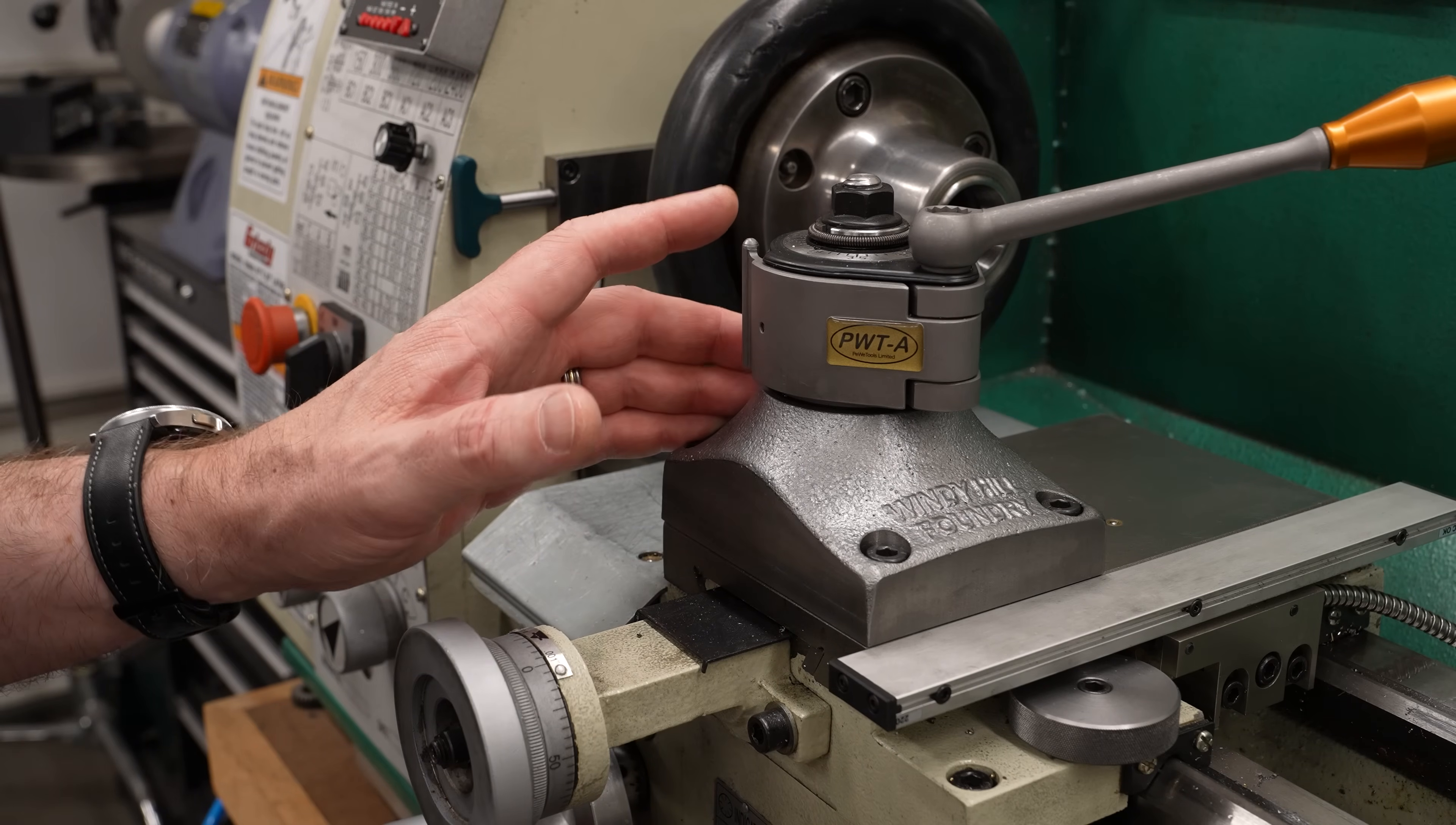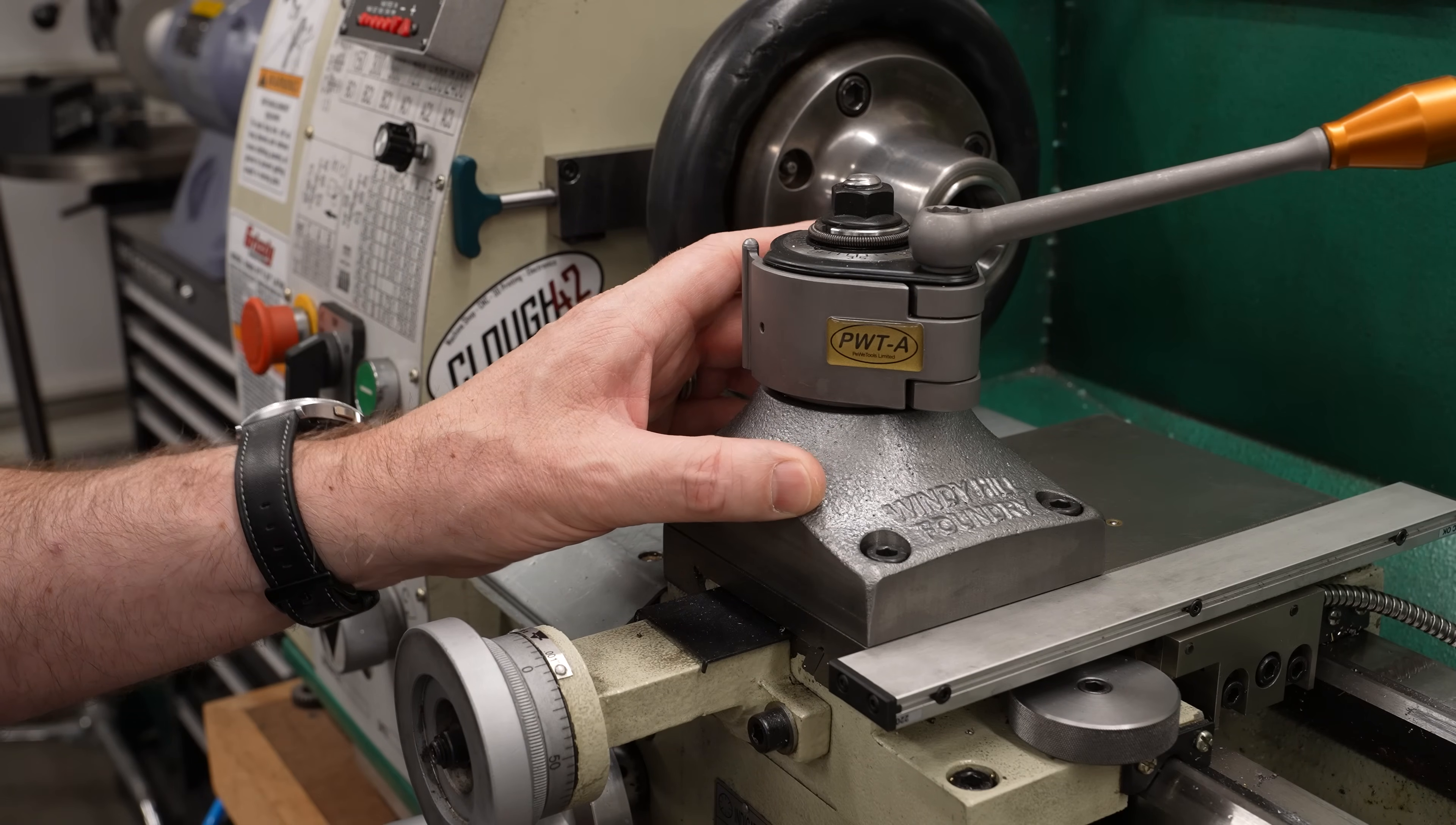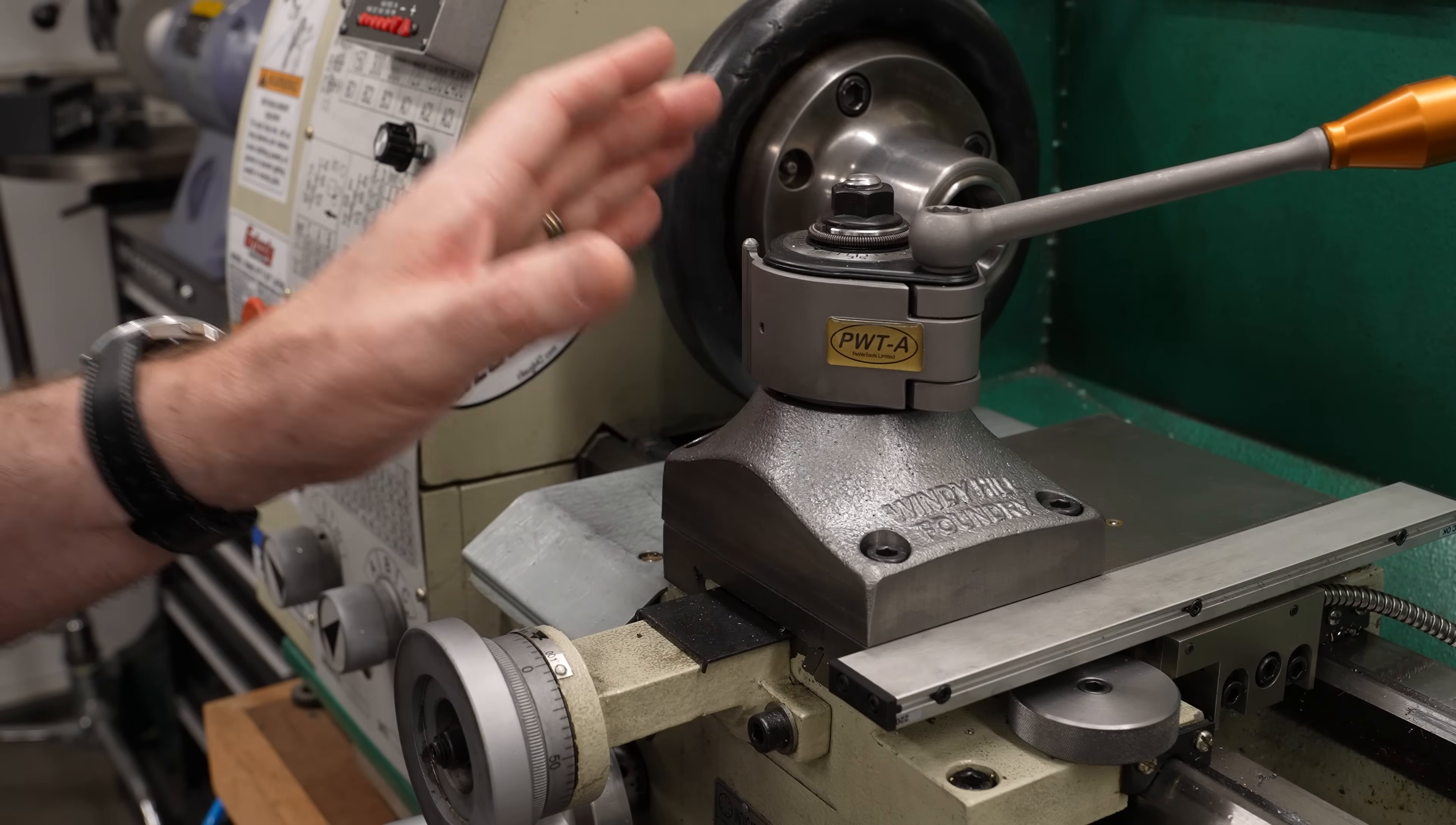When I did this project two years ago, I did it in collaboration with Clark over at Windy Hill Foundry. I made the casting pattern, sent it to Clark, he cast the blanks, sent them back to me, and then I machined it and installed it on the lathe. And I have not looked back. This has been an amazing improvement for this little 10 by 22 lathe.